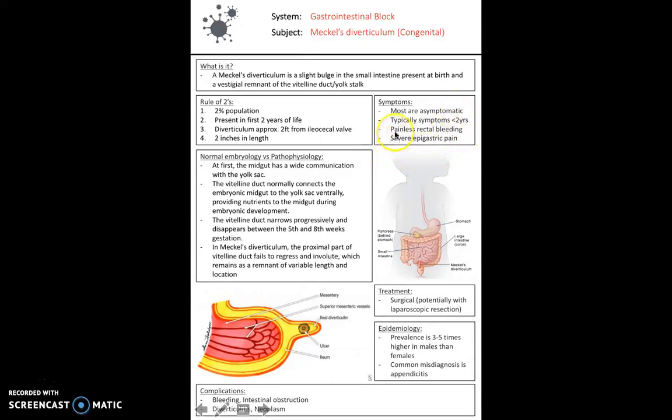If there are symptoms, they develop with painless rectal bleeding and severe epigastric pain. Being aware of the normal embryology of the midgut — the communication with the yolk sac, how that narrows, and how failure to obliterate it can cause problems — is essential for understanding the pathology. Complications of Meckel's diverticulum include bleeding, intestinal obstruction, diverticulitis, and neoplasia.